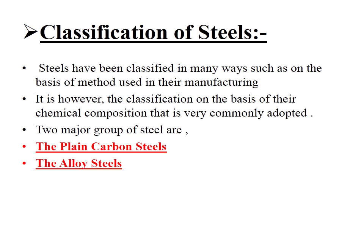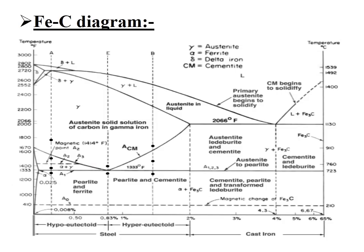Steel is classified into two categories: low alloy steel, also called plain carbon steel, and high alloy steel, called alloy steel. Plain carbon steel does not have many alloying elements like tungsten, chromium, nickel, vanadium, or molybdenum, while alloy steel contains more of these alloying elements. This classification is illustrated by the Fe-C diagram, which will be discussed in detail later.